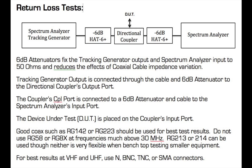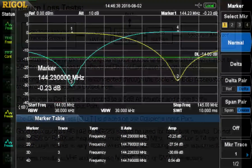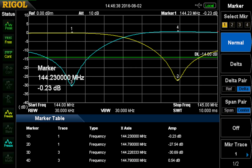The tracking generator output is connected through the cable to the output port, and the coupled port is where you have the spectrum analyzer input. The device under test is placed on the coupler's input port. Again, good coax like RG-142 or RG-223 should be used for best test results. Don't use RG-58 or RG-8X at frequencies above 30 MHz. RG-213 and RG-214 can be used, though neither is very flexible on a benchtop. N, BNC, TNC, and SMA connectors are what you should use if you can. The result of testing shows about 30.69 dB return loss.